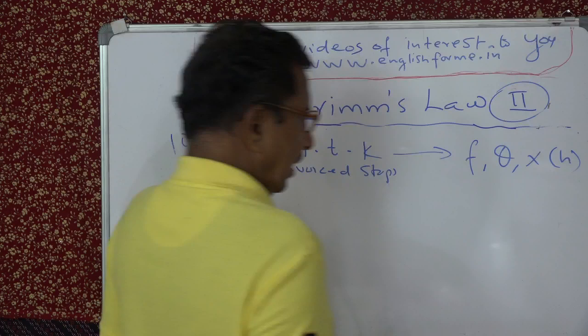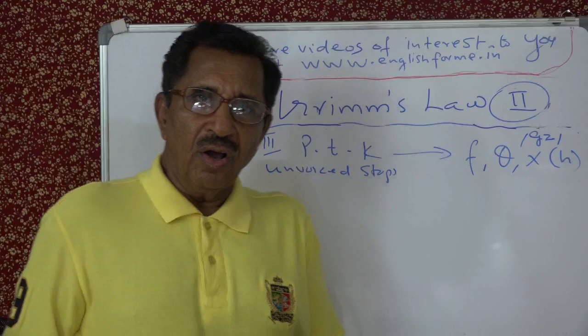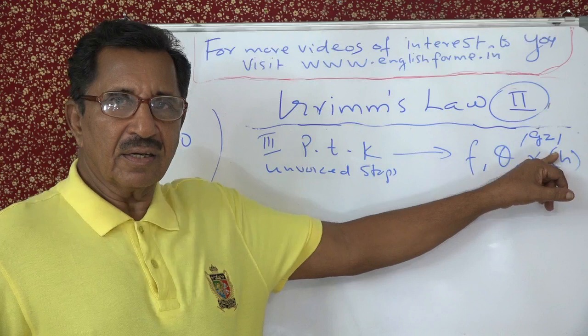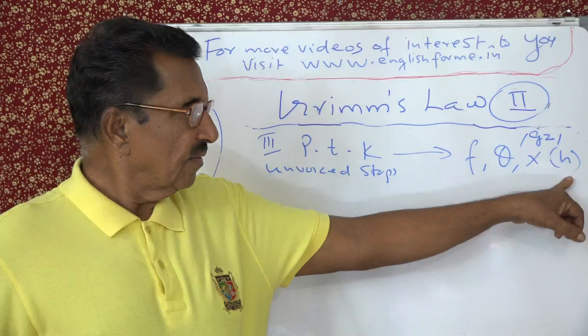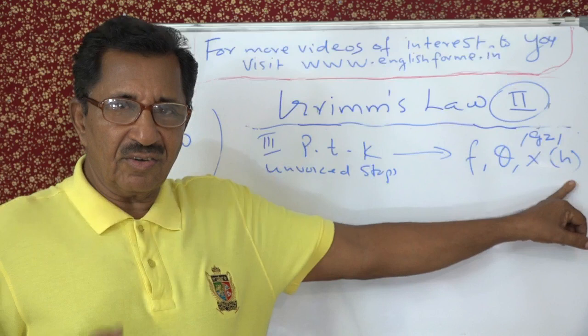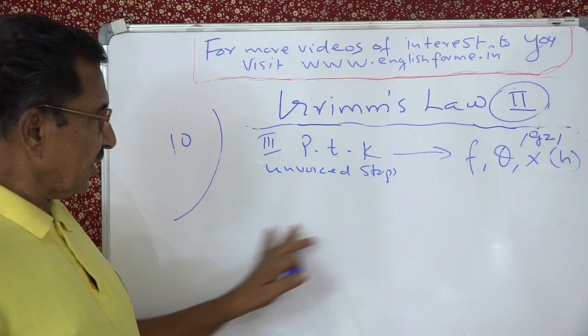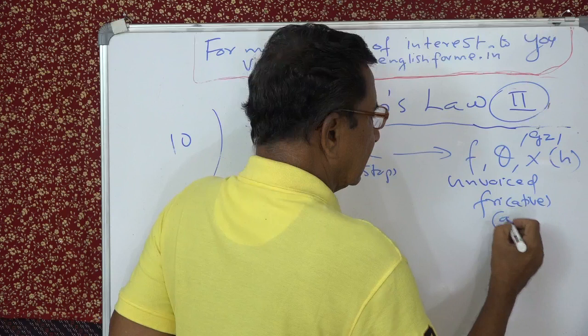In some books, particularly David Crystal's, this sound is written as H or X. Some people call these sounds 'aspirates' — voiceless fricatives. David Crystal gives this sound in his book; in other books you may see the X symbol. We will look at Crystal's book in just a few minutes.